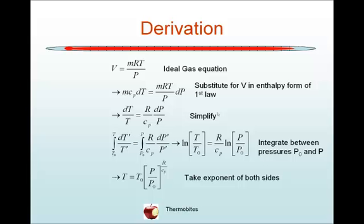The masses cancel on either side of the equation, and we divide through both sides by cₚT to obtain dT/T = R/cₚ dP/P.